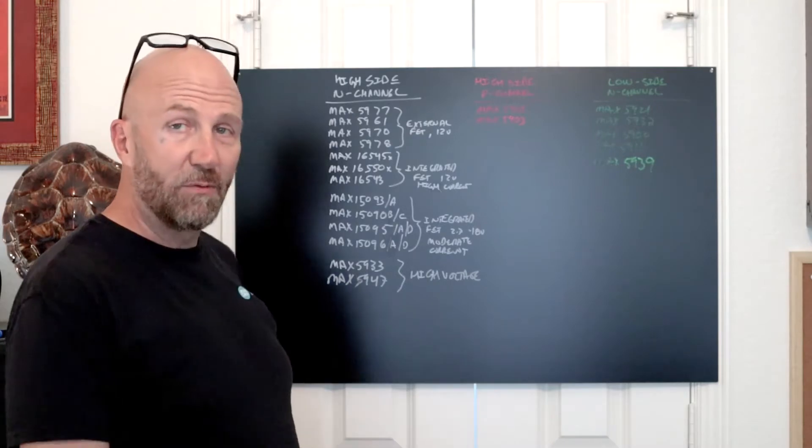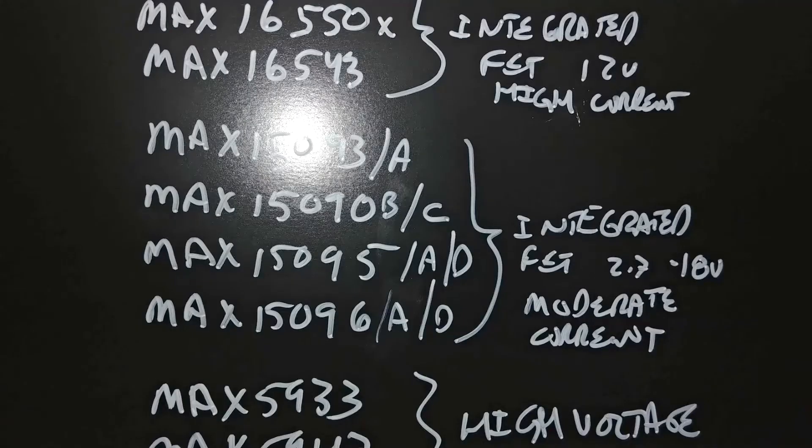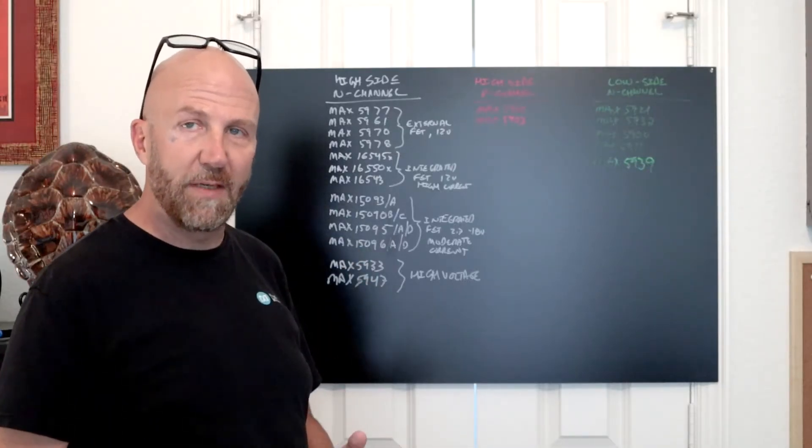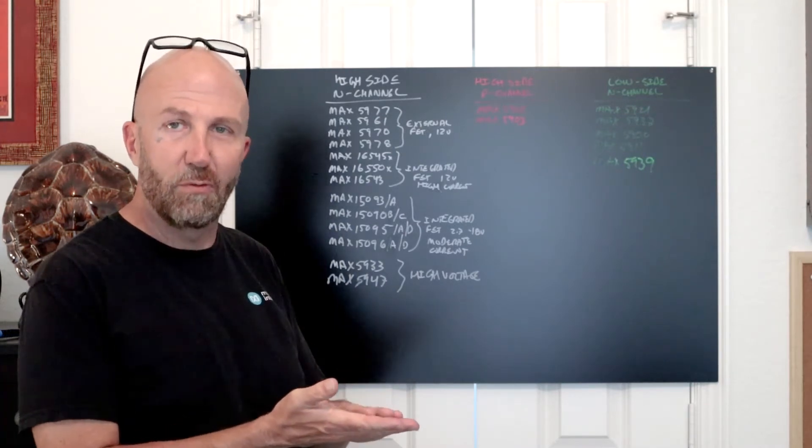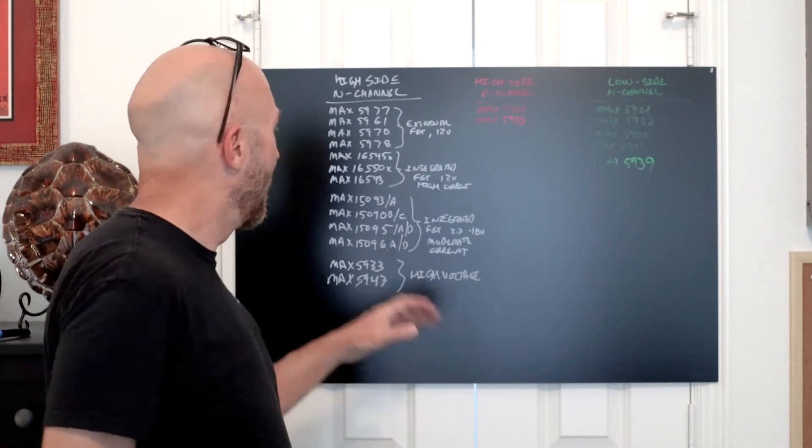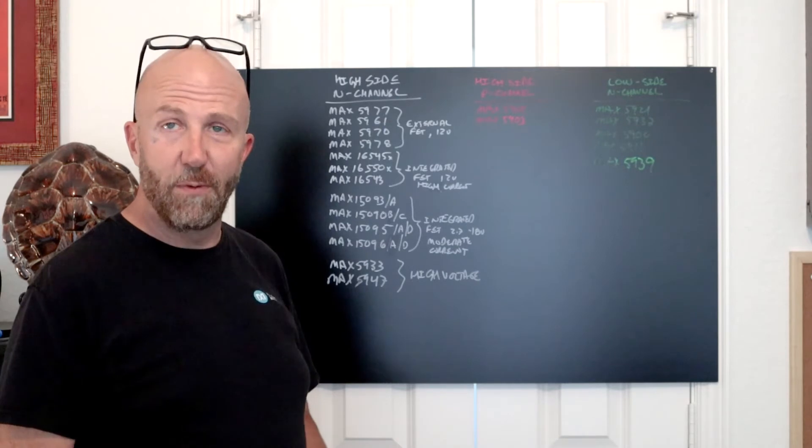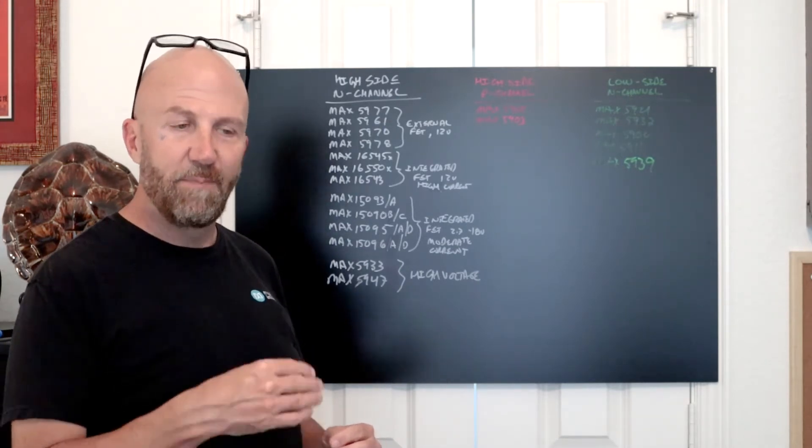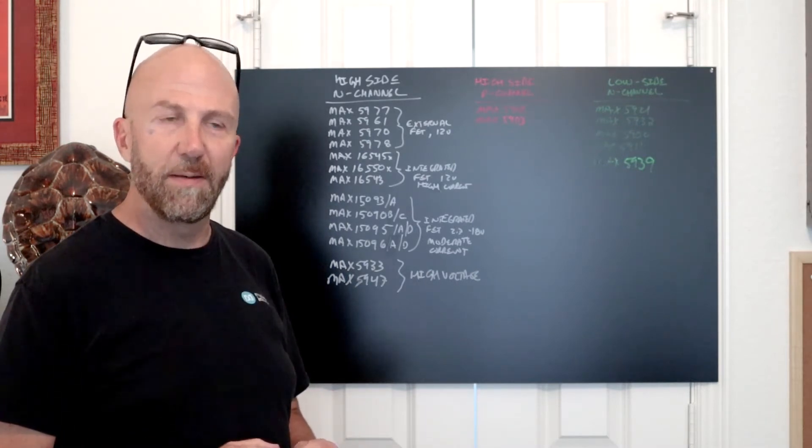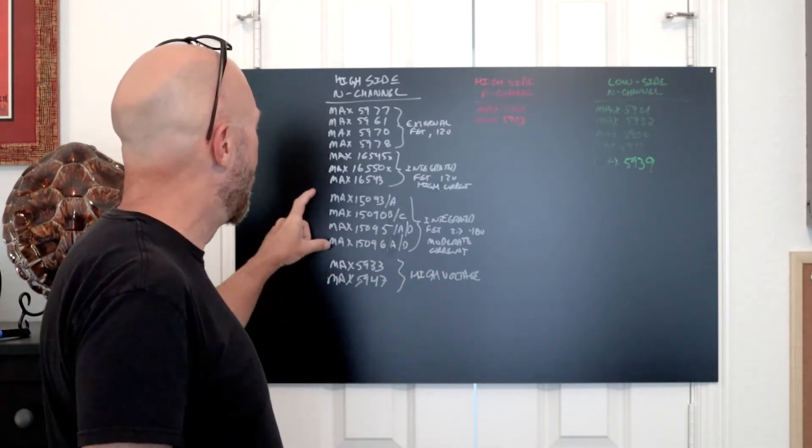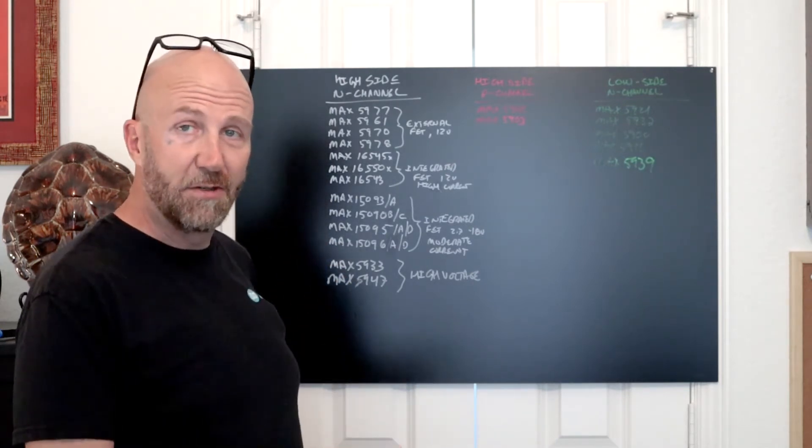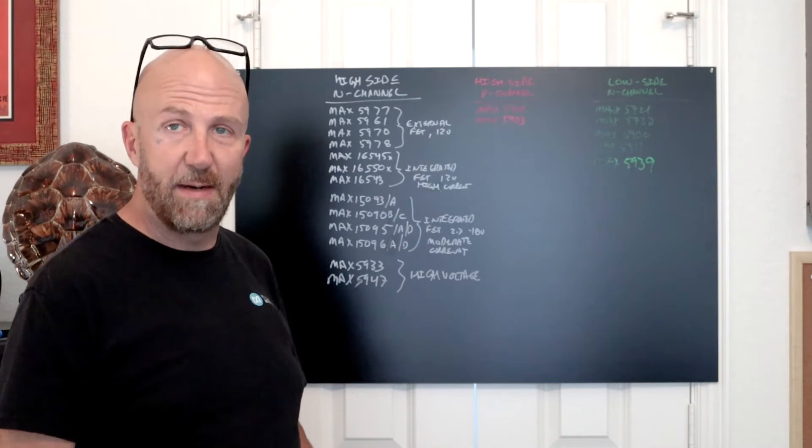Next we have the MAX15093, MAX15090, MAX15095, and MAX15096 family, which are very small compact parts, typically in a WLP package—a wafer level package with a ball grid array or bump array on the bottom. Those parts are good for 2.7 volts to 18 volts at moderate current, from about 6 amps up to 15 amps, and are very nice for 12 volt mid-current applications. They don't have digital telemetry, but they do have precision current sense amplifier outputs.